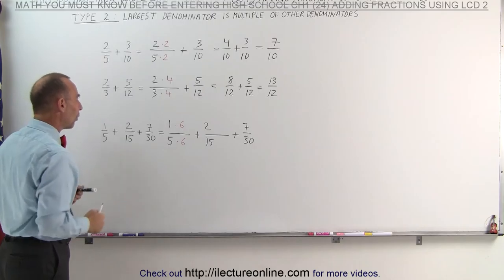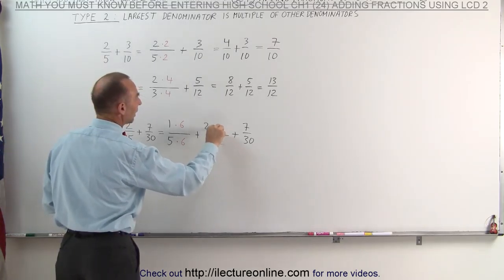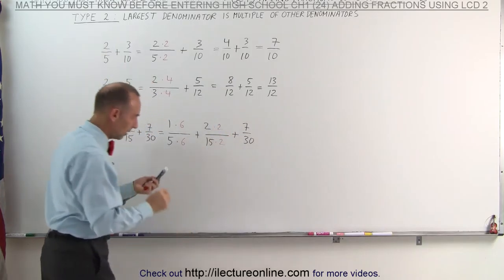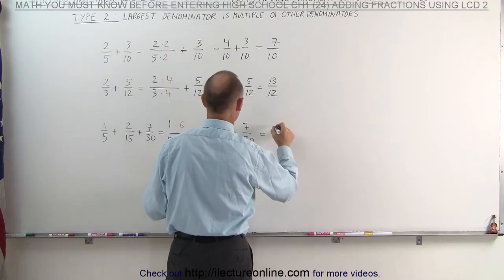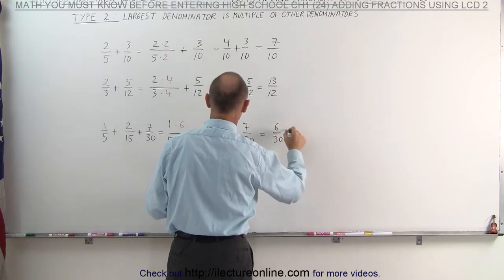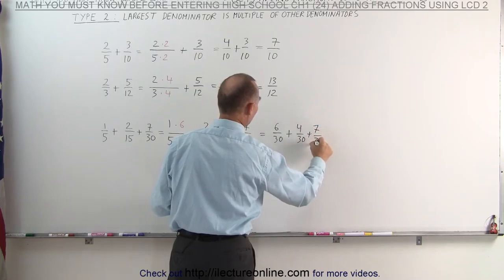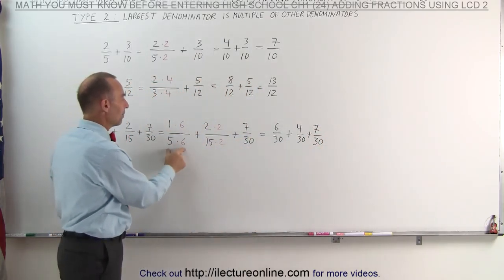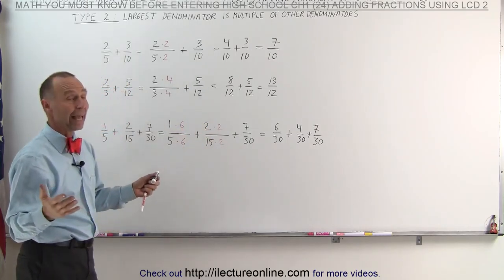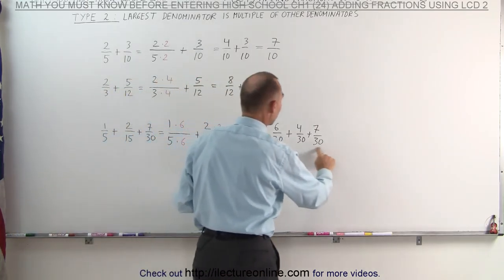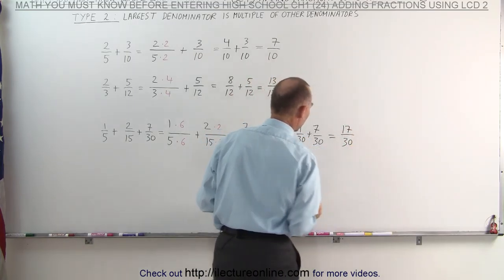15 goes into 30 exactly twice, so I multiply 15 times 2 to make it 30, and I must multiply the numerator by the same number. Now I can write the three fractions as follows: 6 over 30, plus 4 over 30, plus 7 over 30. All we have to do is make all the denominators the same and multiply the numerators. We simply add the numerators together, and this becomes 17 over 30.